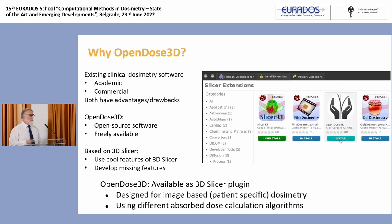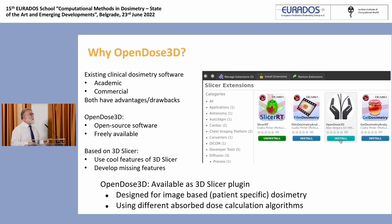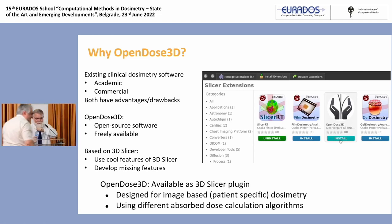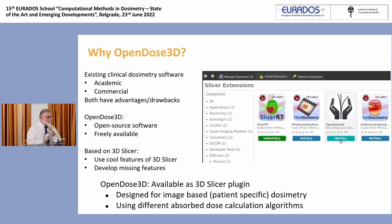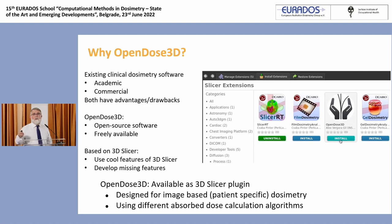What is OpenDOS 3D? We started thinking that where we have academic and commercial software, both are interesting for different reasons. But what we wanted to do is not another software — what we want is a software that is completely open and completely free, so anyone can access the software and the source code. OpenDOS 3D is actually a 3D Slicer plugin — it's an official Slicer module that you can download from inside Slicer — and it can use different absorbed dose algorithms. You have to focus on the non-existing features in the clinical dosimetry workflow that you have to develop to produce a clinical dosimetry software.